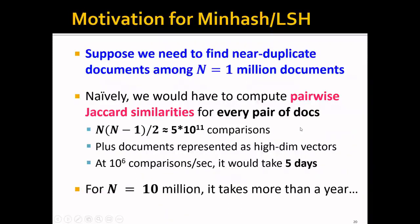You might be wondering, why can't we just directly use the shingles to find similar documents? Well, suppose we need to find near-duplicate documents among 1 million documents, and naively we would have to compute pairwise Jaccard similarities for every pair of documents, and that would be about 5 times 10 to the power of 11 comparisons.